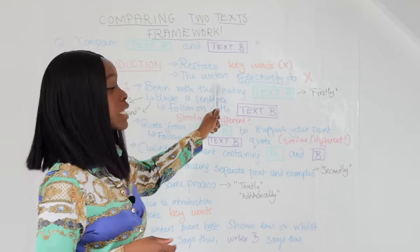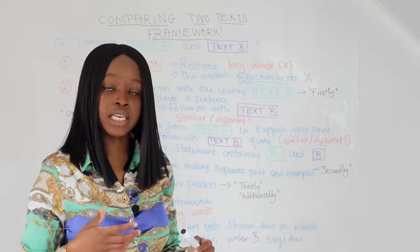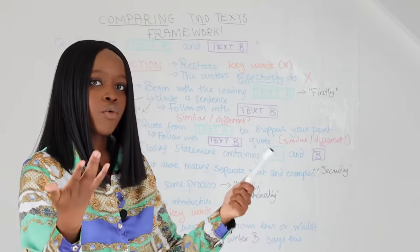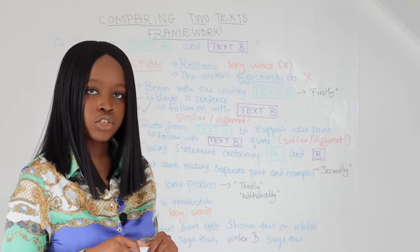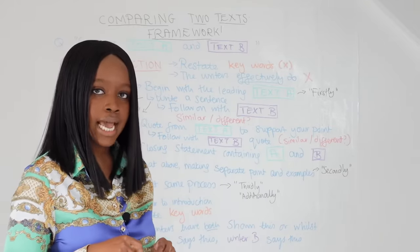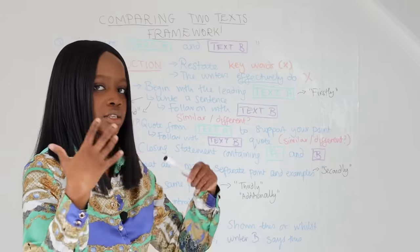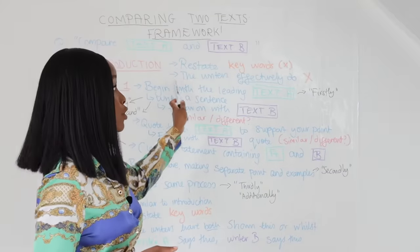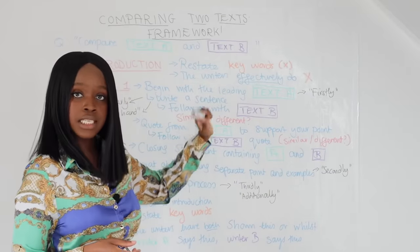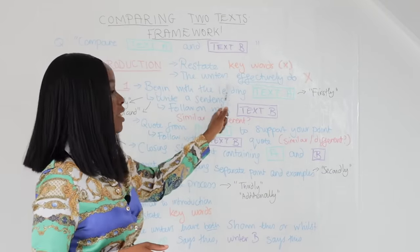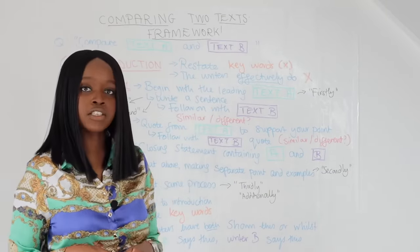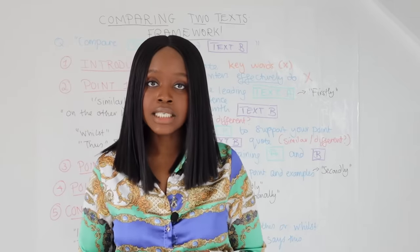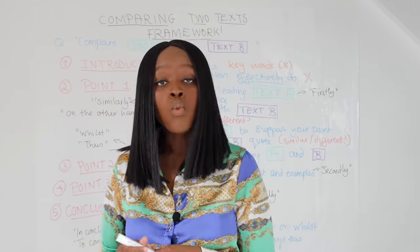Then you state that the writers effectively present the keyword — love, power, whatever it is — through a variety of literary, language, or structural techniques. That's essentially your introduction: restate the keywords and then say that the writers present these either in very similar ways or in very different ways.